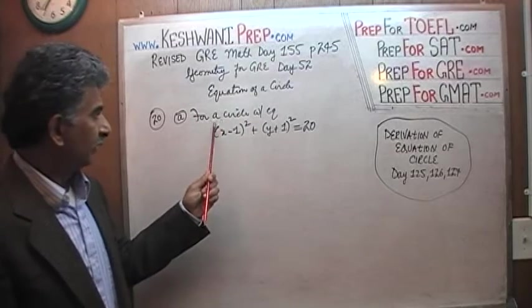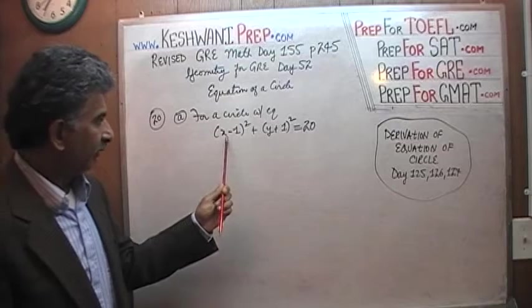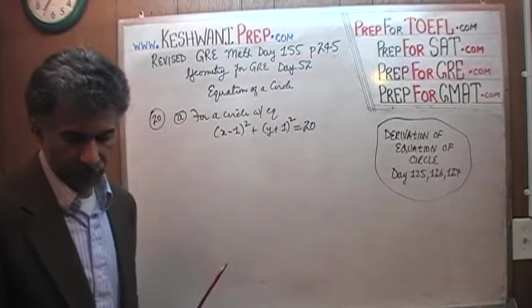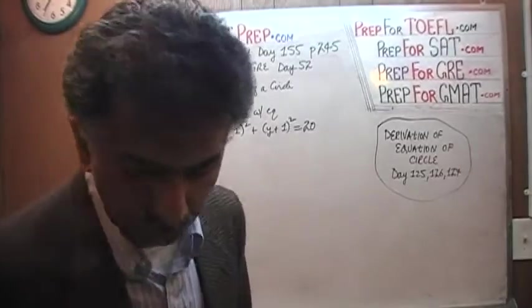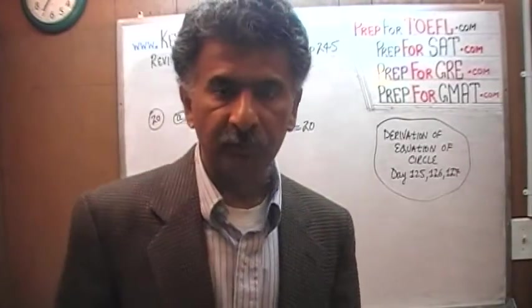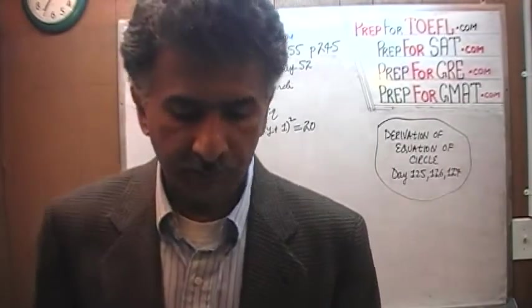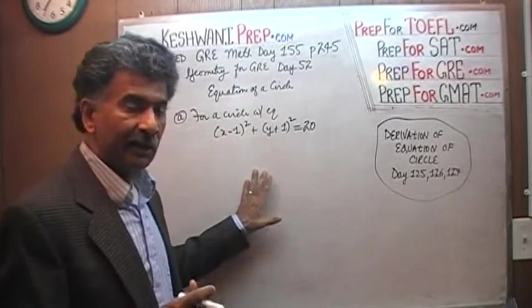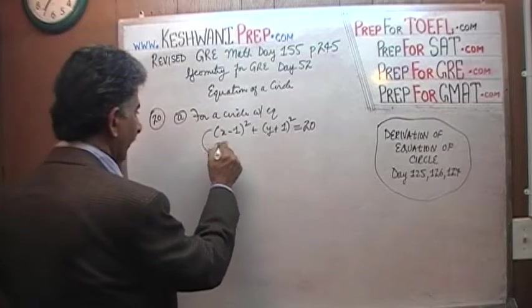They tell you that for a circle with the equation (x-1)² + (y+1)² = 20, they want us to answer a few questions. I am going to go through this question fairly quickly. I am not going to spend time explaining every nitty-gritty detail as to why.